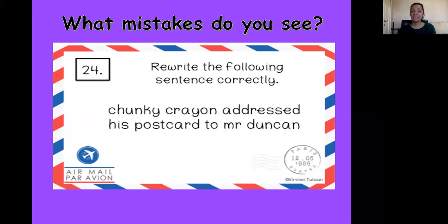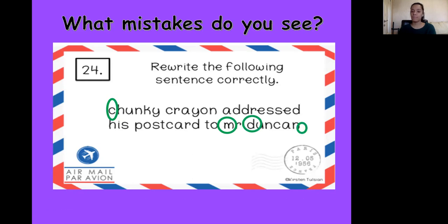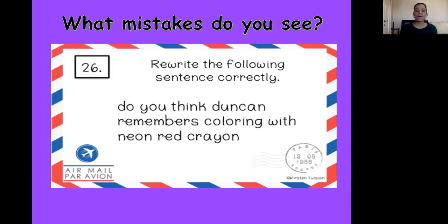What mistakes do you see here? Chunky crayon addressed his postcard to Mr. Duncan. The C at the beginning of the sentence needs to be capitalized — the C in Chunky. We have a name: Mr. Duncan. Mr. is not part of his name, but it is part of his title — like I am Miss Carolina. The Miss is not my name; it's my title as a teacher. But that also needs to be capital because it makes part of my name as a teacher. So: Chunky crayon addressed his postcard to Mr. Duncan, capital M, capital D, full stop.